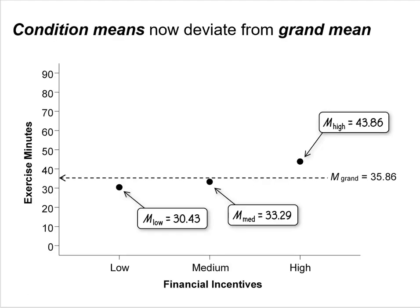On this slide, condition means now deviate from the grand mean. The grand mean for all 21 subjects is still 35.86. The low incentive condition showed a mean of 30.43, the medium incentive condition showed 33.29, and the high incentive condition showed 43.86. Because each of these dots deviates from the grand mean, we now have some between-groups variability.